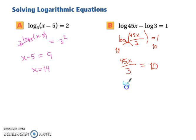Now it's something that we can easily solve. So we multiply both sides by 3, leaving us with 45x equals 30, and then we can divide both sides by 45, which leaves you with x equals 2 thirds.